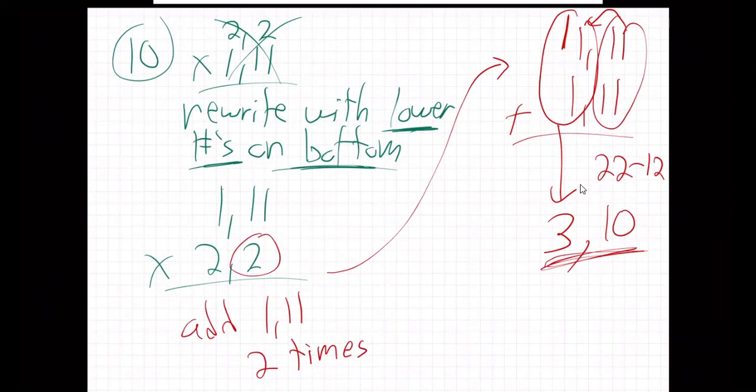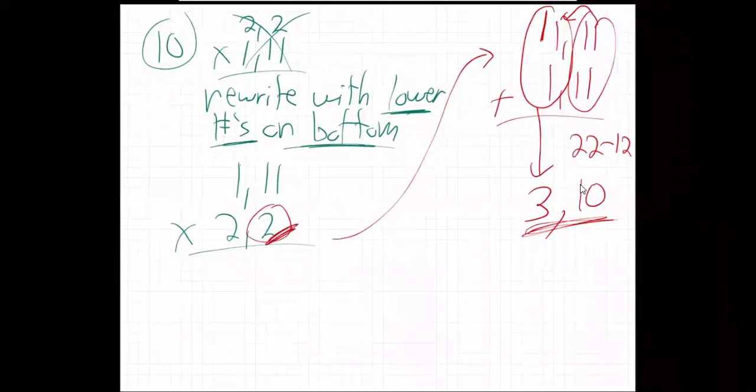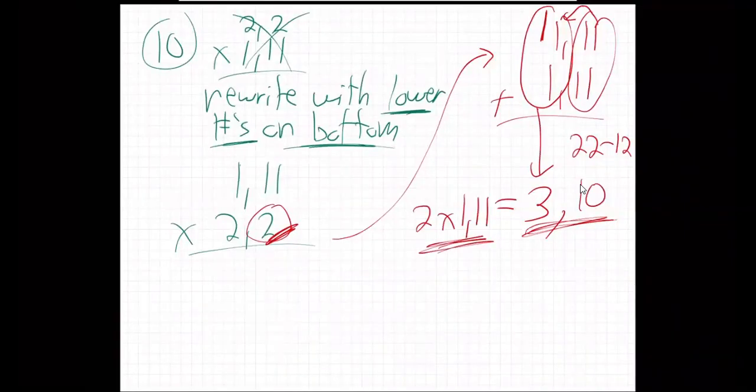We good there? So it's 3,10. All right? So that means this is 2 times 111, isn't it? I just added 111 twice. So that's 2 times 111. What is it? 3,10. And then what do we do? So this guy's done.